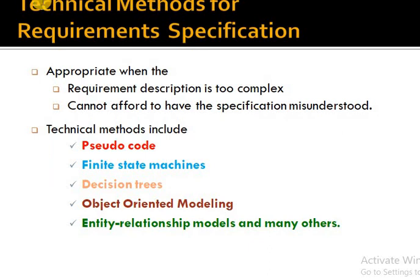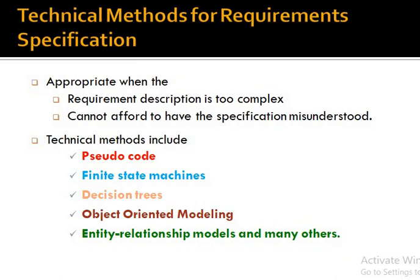First of all, what is the need for technical methods for requirement specification? They are appropriate when the requirement description is too complex, or when we cannot afford to have the specification misunderstood. We need to use technical methods for functional and non-functional requirements. We can narrate requirements statement by statement, but sometimes requirements are very complex. If we represent them statement-wise, understanding and then coding them becomes very difficult. So we use more technical methods when the requirement description is too complex.